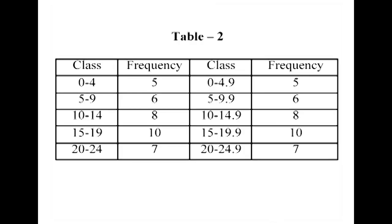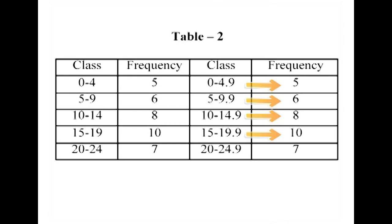In the inclusive method, the upper limit of a previous class is less by 1 from the lower limit of the next class interval. This method allows a class interval to include both its lower and upper limits within it. For example, the class intervals and frequencies are: 0–4 (frequency 5), 5–9 (frequency 6), 10–14 (frequency 8), 15–19 (frequency 10), 20–24 (frequency 7). In decimal form: 0–4.9 (5), 5–9.9 (6), 10–14.9 (8), 15–19.9 (10), 20–24.9 (7).